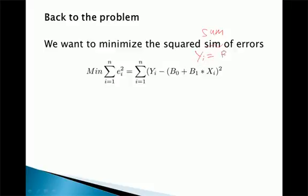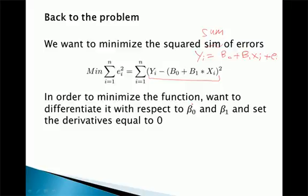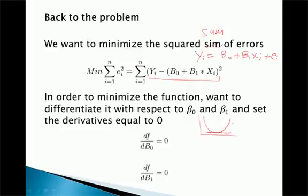Back to the problem of deriving our beta 0 and beta 1 coefficients. We want to minimize the sum of squared errors, because we decided that's the best measure of how well our model is doing in predicting the y values. y_i equals beta 0 plus beta 1 times x_i plus e_i, where i is a specific observation. In order to minimize the function, we differentiate with respect to beta 0 and beta 1 and set the derivatives equal to 0.